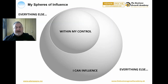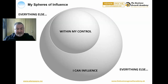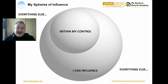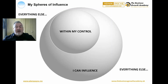Now, using the drawing, write out each worry item on your spheres of influence — assess each one. Do you have complete control over the worry item, i.e., you can resolve it on your own? Put it in the 'within my control' circle. Can you influence the outcome through actions or behaviour? Put it in the 'I can influence' circle. Everything else is completely outside of your control, so put those on the outside.